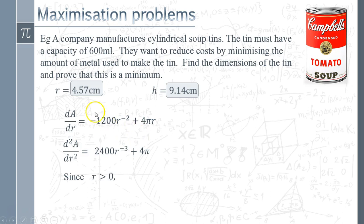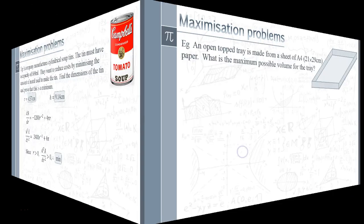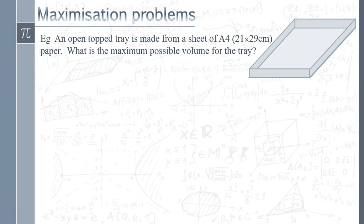Since the radius is greater than zero, the term 2400/r³ is greater than zero, so d²A/dr² is greater than zero — confirming this is definitely a minimum. That answers the question. Now for the final example, which is a classic for maths teachers: we have a sheet of A4 paper that we fold up to make an open-top tray. The question is: what is the maximum possible volume you can make for a tray from a sheet of A4 paper?